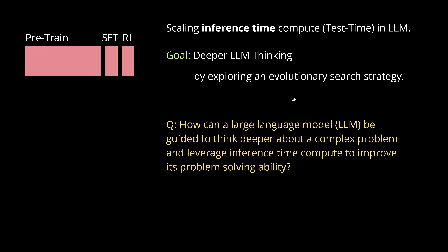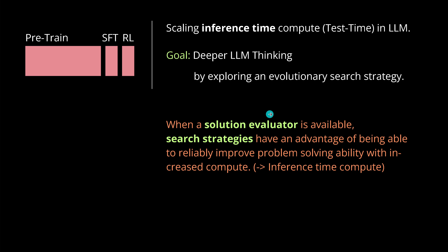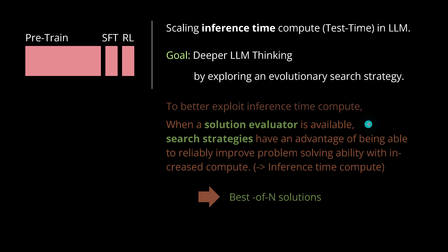The main question was: how can an LLM be guided to think deeper about a real complex problem and leverage inference time compute to improve its own problem-solving abilities? And the idea was simple: if we have a solution evaluator for our search process, the search strategy has the advantage of being able to improve problem-solving ability with increased compute. So the more inference time compute we offer to the LLM, the LLM will provide better solutions because it has more time for elaborated search strategies and an inherent solution evaluator.